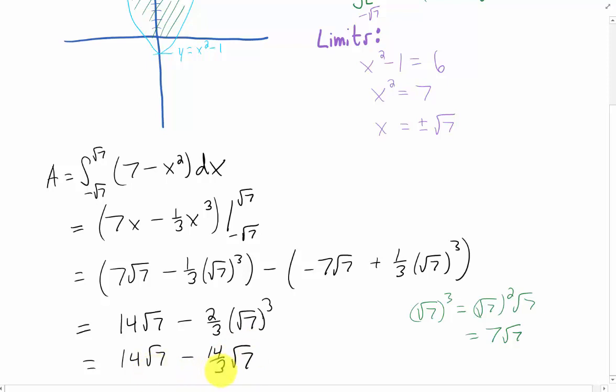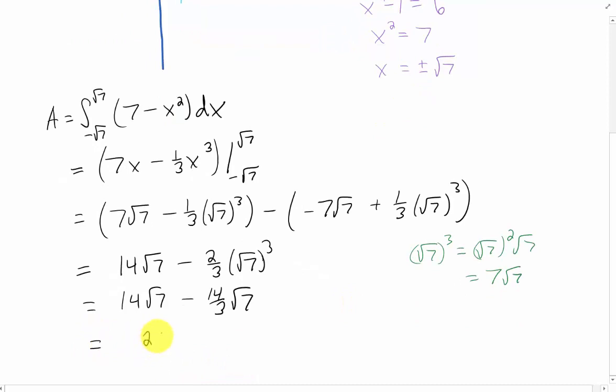Finally, we can combine these two terms since they're like terms with √7. Combining them gives us (28/3)√7.